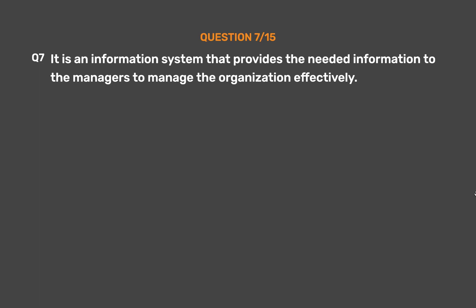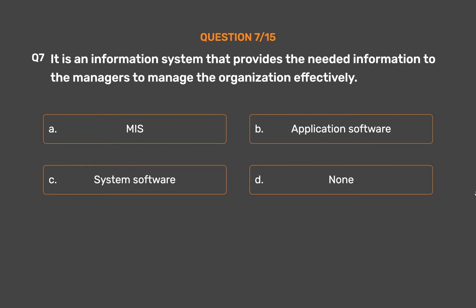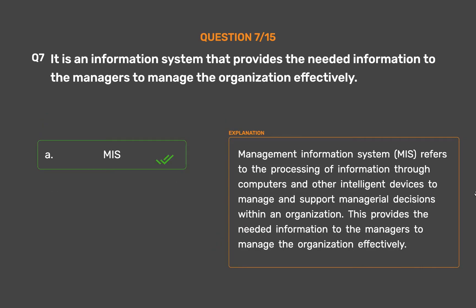Question No. 7. It is an information system that provides the needed information to the managers to manage the organization effectively. Option A: MIS. Option B: Application Software. Option C: System Software. Option D: None. The correct answer is Option A — MIS. Management Information System (MIS) refers to the processing of information through computers and other intelligent devices to manage and support managerial decisions within an organization, providing the needed information to managers to manage the organization effectively.